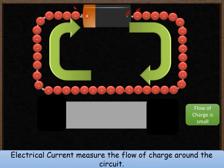An electrical current measures the flow of charge around the circuit. So if the flow is quite small, if there's not many electrons going past a given point, the current is going to be quite small. We'll have a look at that now. So in this example here, the flow of charge is relatively small. There's very few electrons moving past this point.